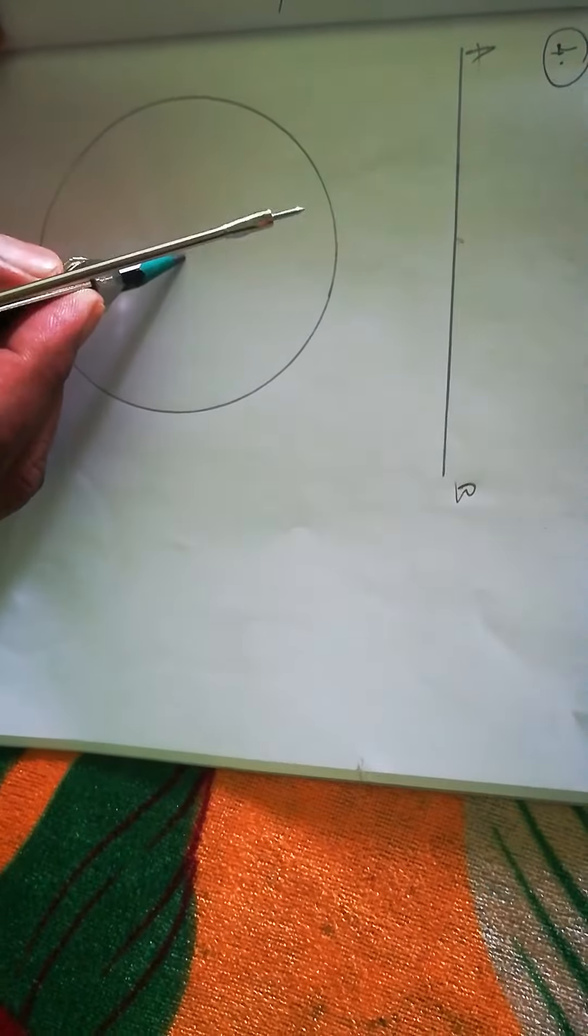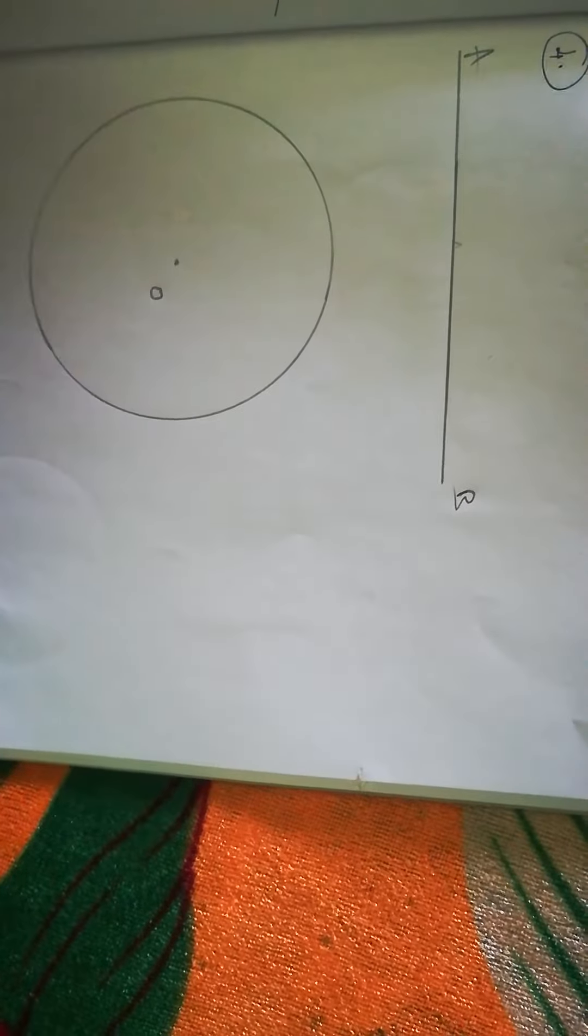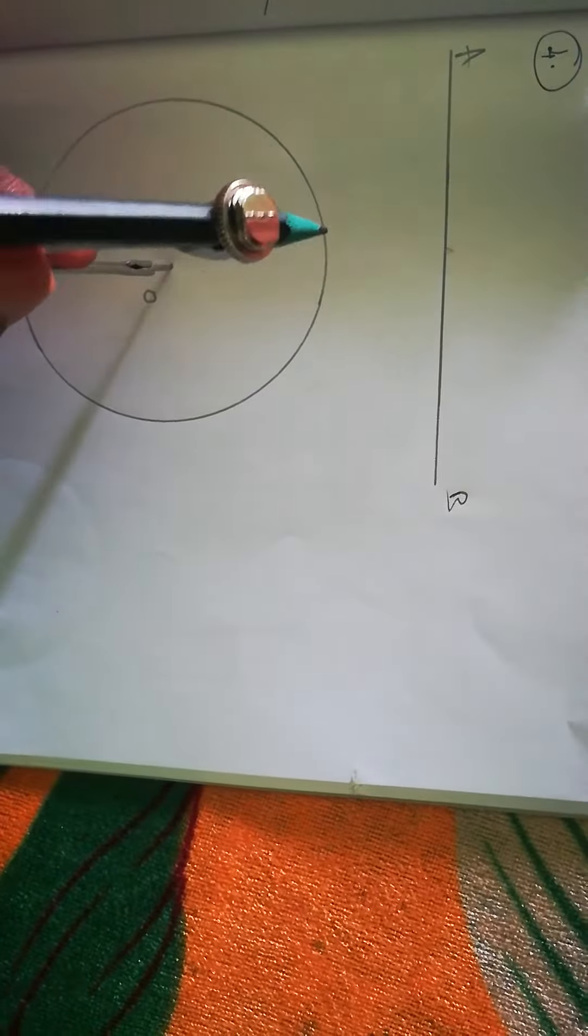The line we can name AB, and here is center O. From O you take any radius and cut that line.